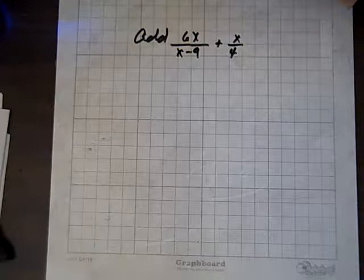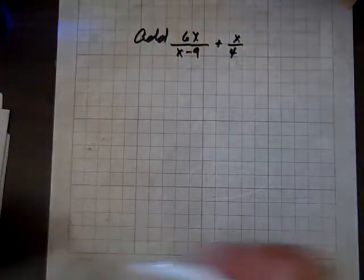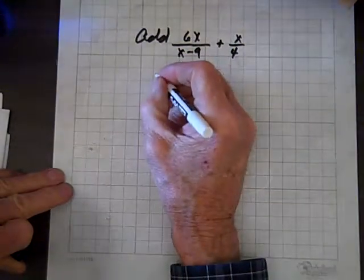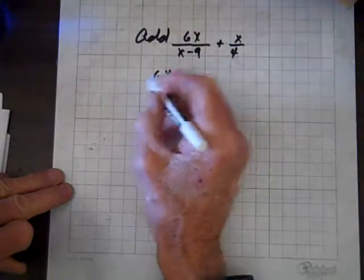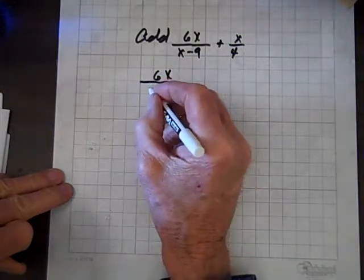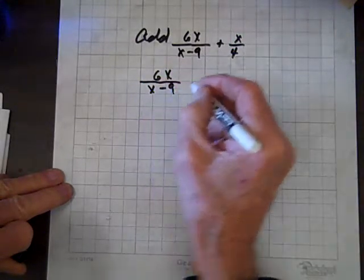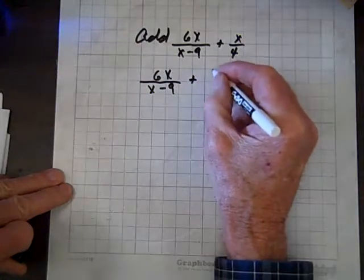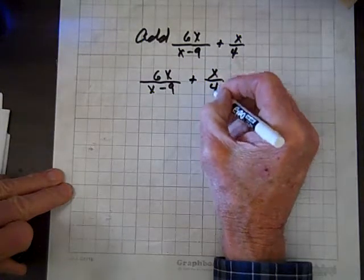Okay, here we have a couple of fractions to add. We have 6x over x minus 9 plus x over 4.